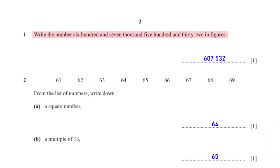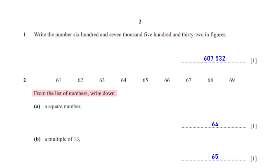Write the number 607,532 in figures. Here is the number written in figures — you can type 607,000 plus 532 into your calculator to confirm. From the list of numbers, write down a square number. From the list, 64 is a square number: 8 squared gives us 64.